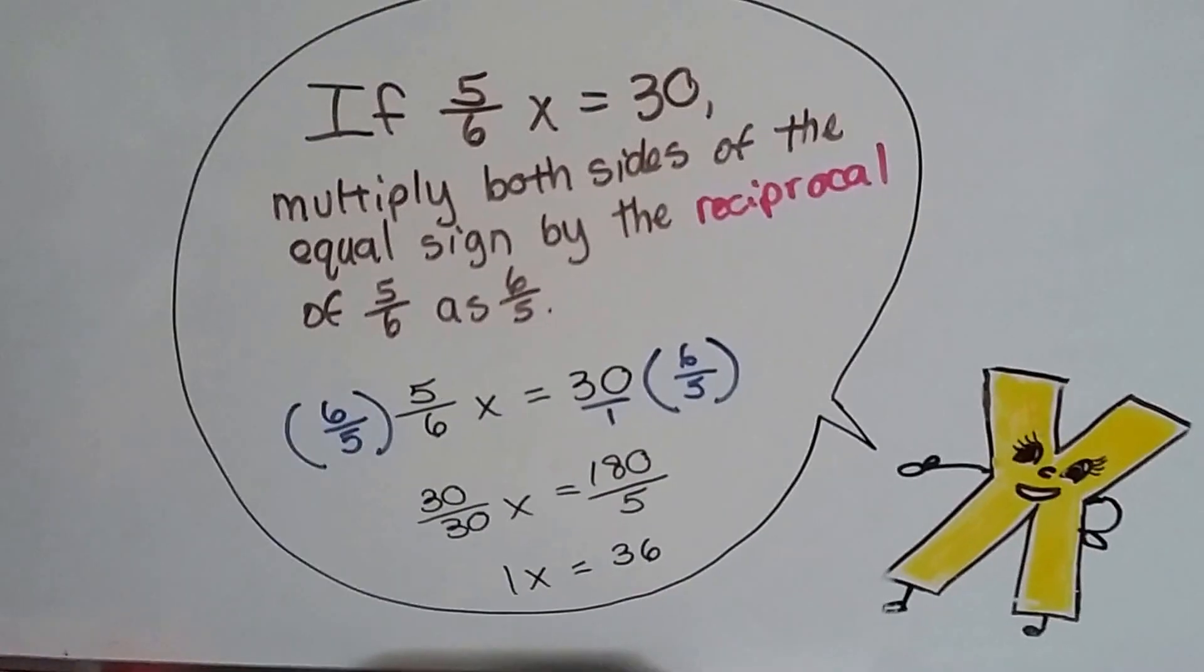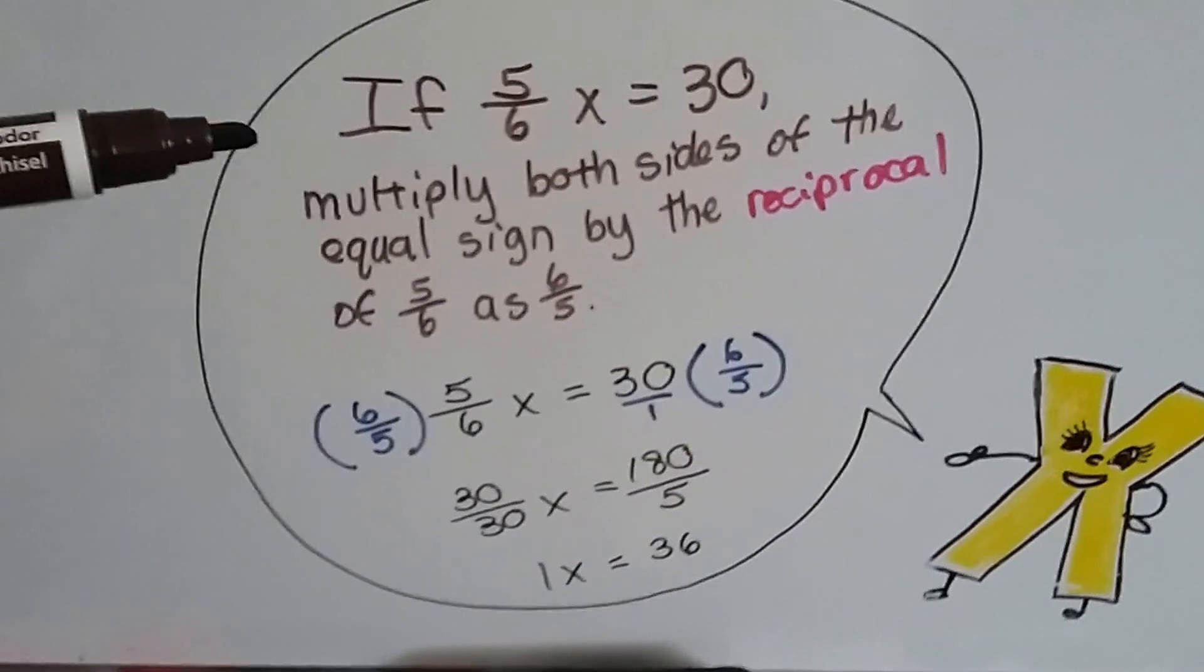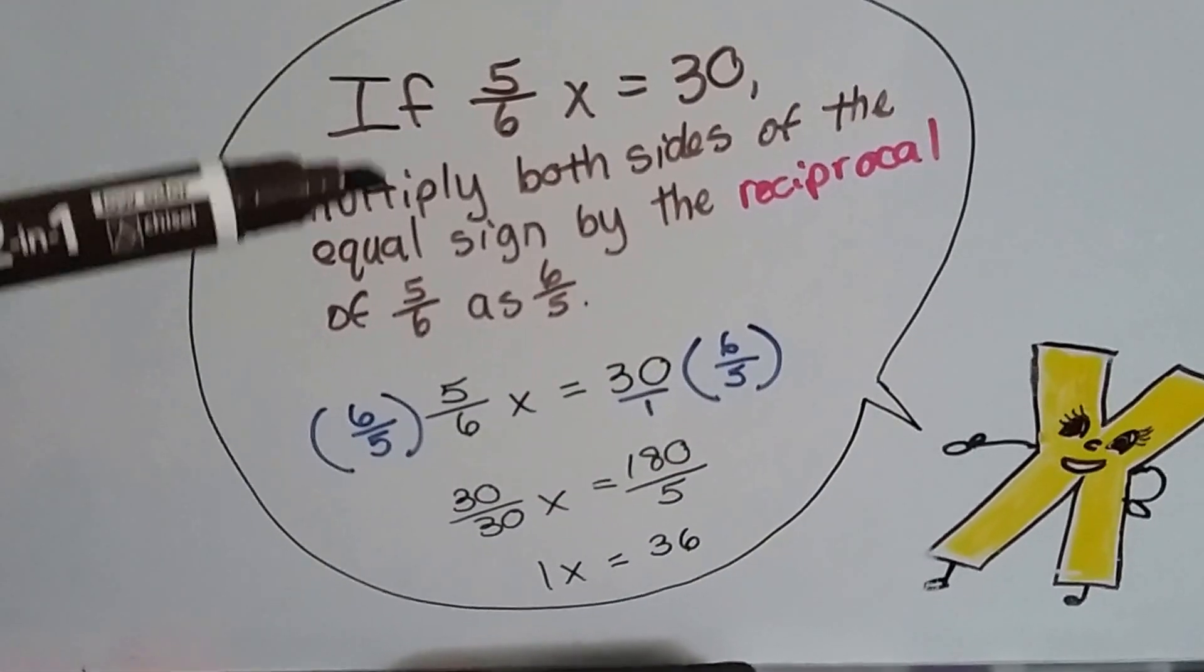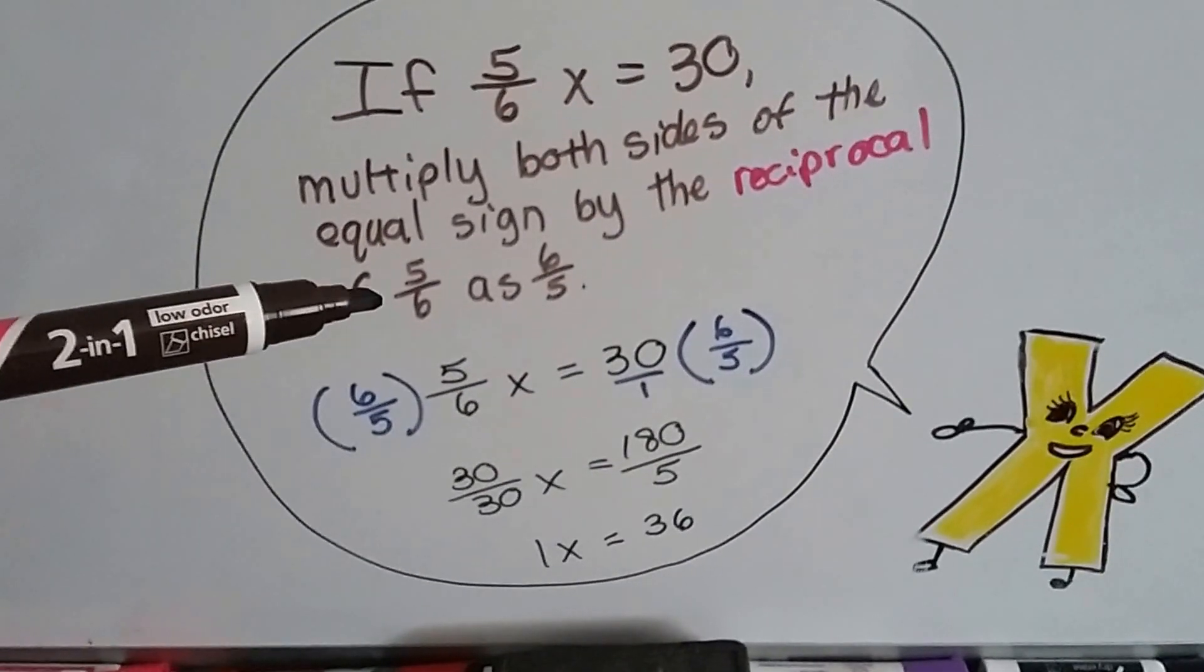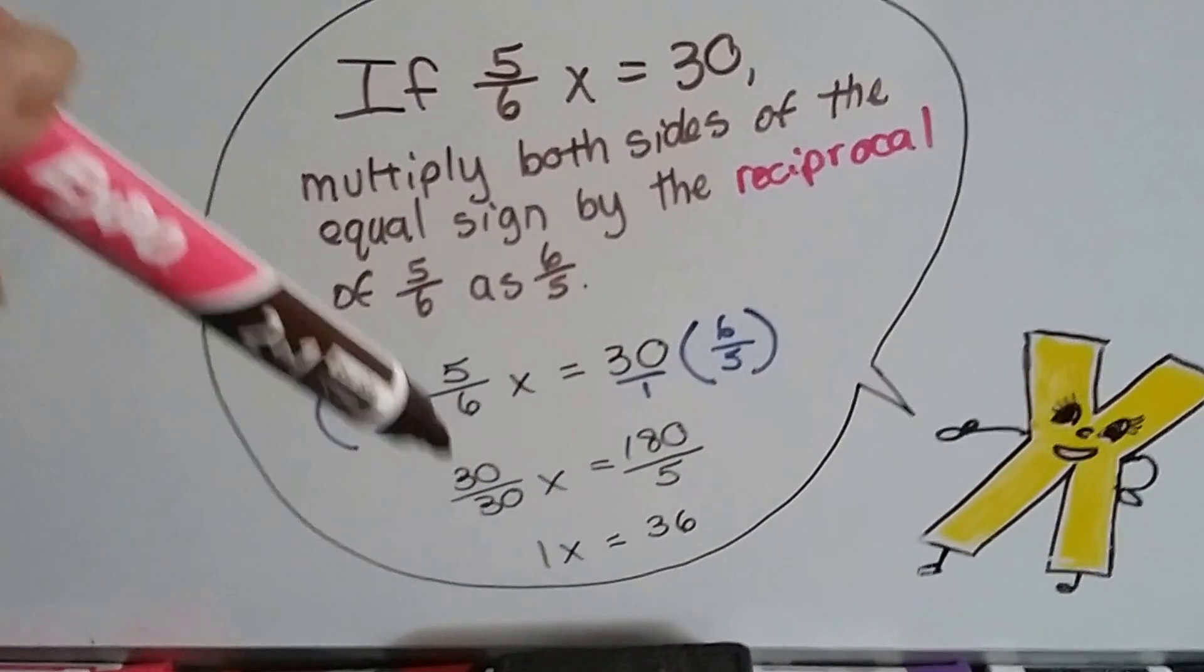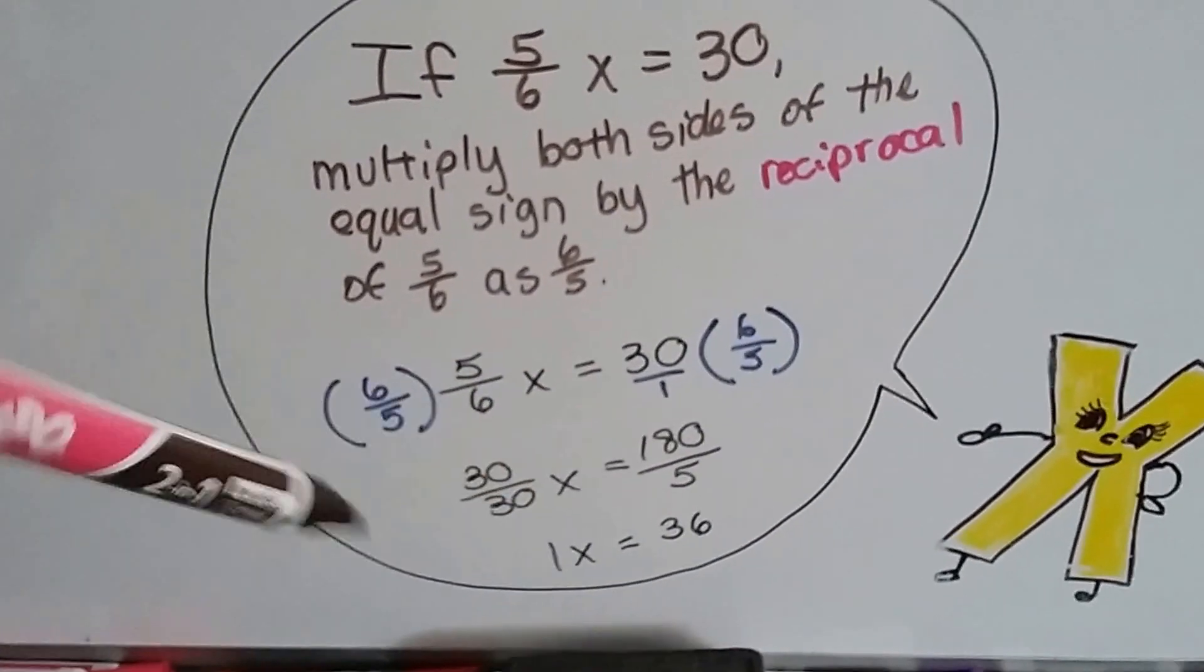To explain this, if five-sixths X equals thirty, to find out what X is, we just multiply both sides of this equal sign by the reciprocal of five-sixths as six over five. That makes thirty over thirty, which is really one X, our identity property, our invisible one. We don't need to write it, do we?